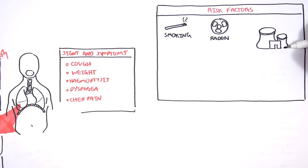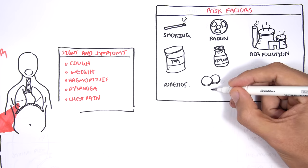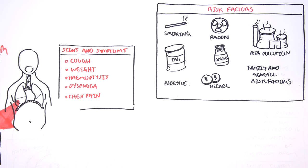There are many risk factors for lung cancer. Major ones are smoking, radon, air pollution, arsenic, tar, asbestos, nickel, as well as family and genetic factors.